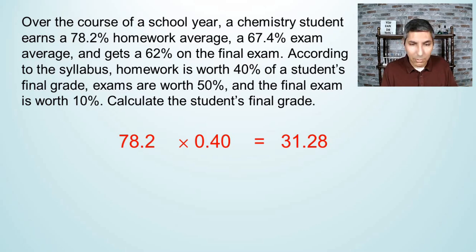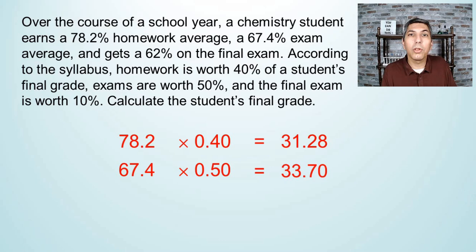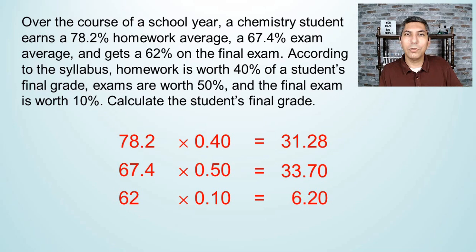We do the same thing for the next category, which is the exam average. The student earned a 67.4% exam average, and it says that exams are worth 50%, so we multiply it by 0.50 this time. 67.4 times 0.50 equals 33.70. Then we have one last category, which is the final exam. The final exam is worth 10%, and the score was a 62. So 62 times 0.10 is 6.20.